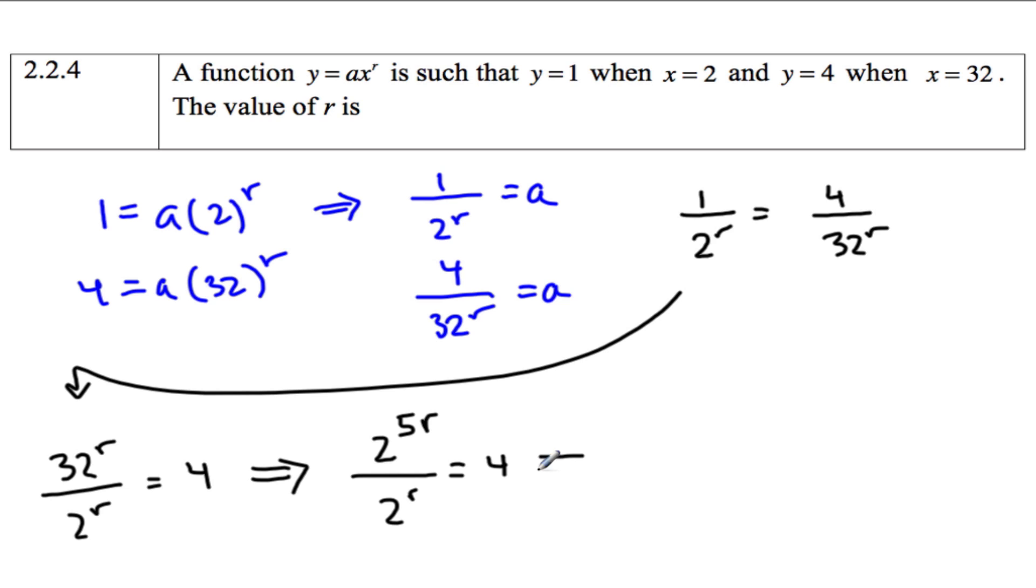And subtract these. I have 2 to the, subtract these powers. I have 4r, to the 4r, equals 4. And 4 is 2 squared. So you can see if 2 to the 4r equals 2 squared, then 4r, 4r must be equal to 2.